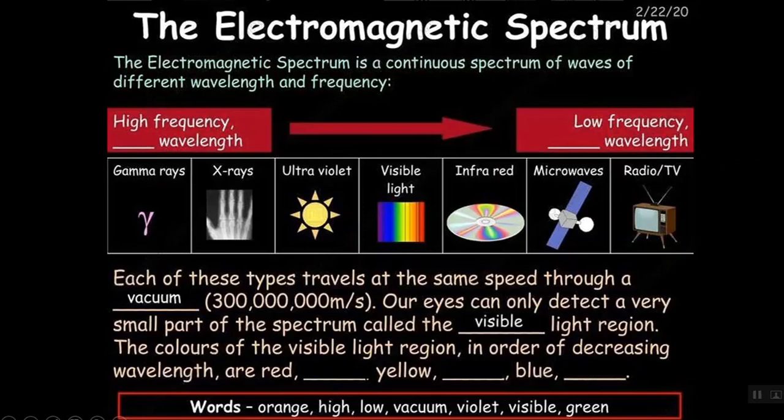Our eyes can only detect a small part of the spectrum called the visible light region. Colors of the visible light region in order of decreasing wavelength are red, orange, yellow, green, blue, and violet - ROY G BIV, or Richard of York Gave Battle In Vain. There's an indigo missing there at the end between blue and violet.